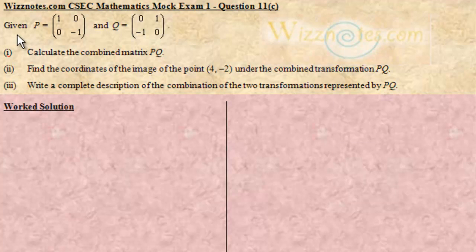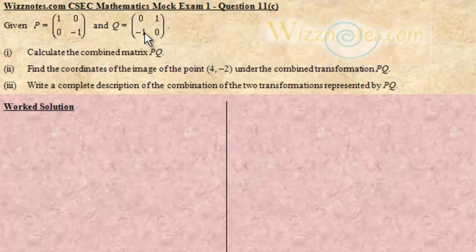The question reads: given that P equals the matrix [1, 0; 0, -1] and Q equals the matrix [0, 1; -1, 0], we have to calculate the combined matrix PQ. In other words, we're simply multiplying matrix P by matrix Q.